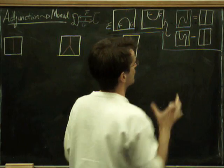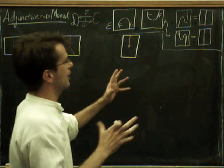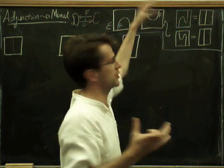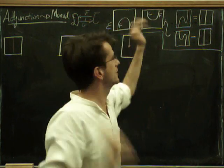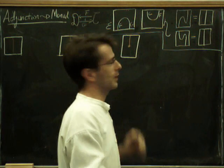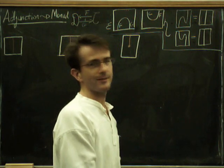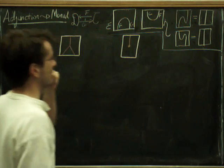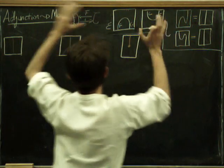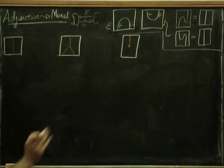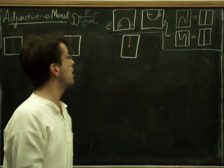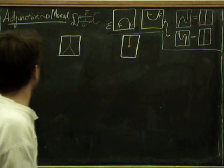Here they attain new names for obvious reasons — either the snake identities, or something like that. So we've got this data, we've got an adjunction, and we want to produce from that data a monad. So what was a monad?